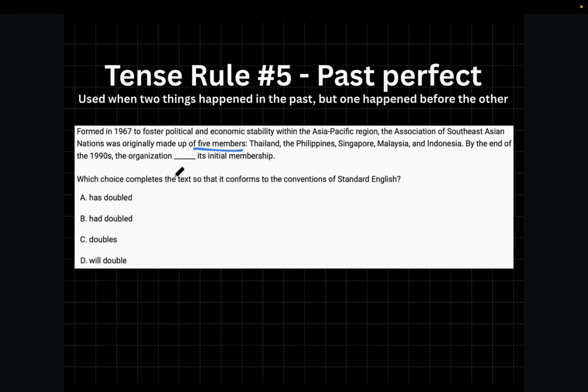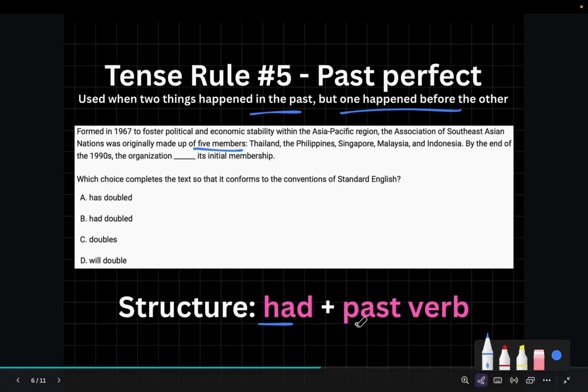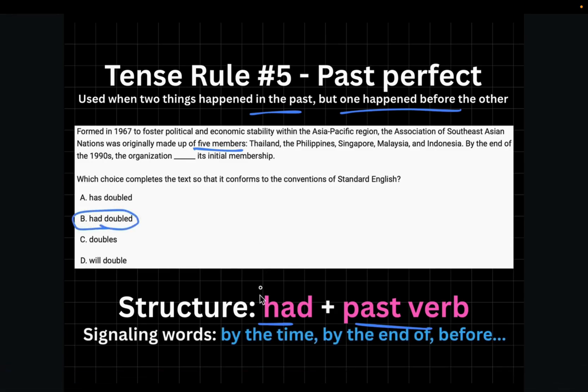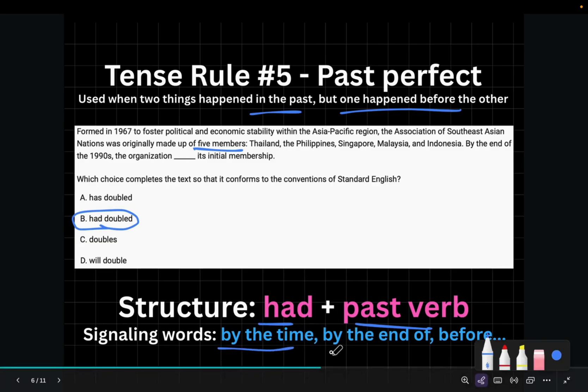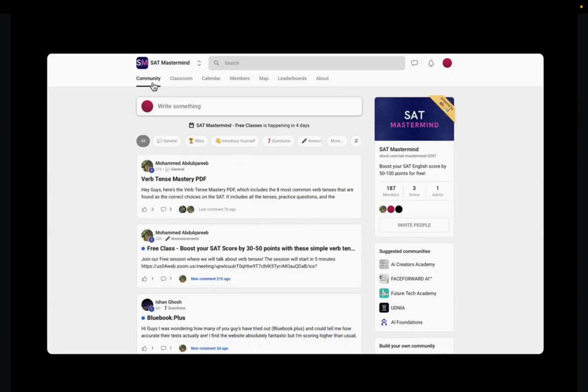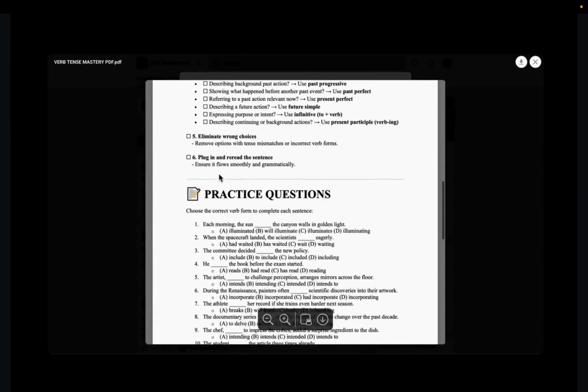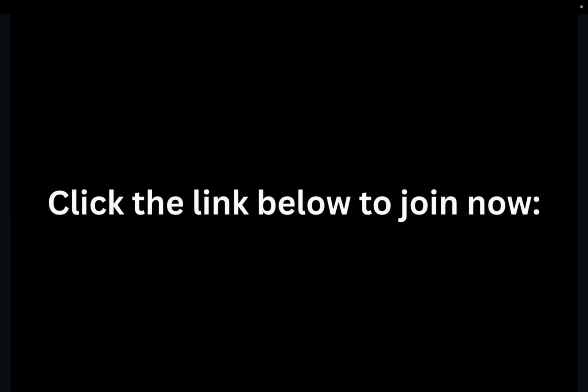Past perfect, again, is used when two things happen in the past, but one happened before the other. Its structure is basically had plus the past verb, which means in this case, choice B would be correct. And sometimes you'll see some signaling words, such as by the time, or by the end of, or before. So in this case, it says by the end of the 1990s, the organization had doubled its initial membership. Oh, and by the way, you can download the list of these eight verb tenses from our community, and you can click the link below to join now.